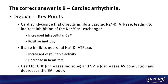In this case, that answer is B, cardiac arrhythmia, as the most common side effect of the medication she was given, which was digoxin. Let's go over some key points of digoxin therapy. First, it's a cardiac glycoside that directly inhibits cardiac sodium-potassium ATPase and leads to indirect inhibition of the sodium-calcium exchanger.